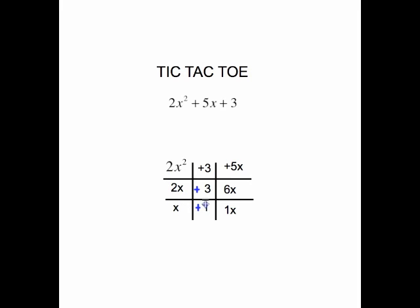So everything in this grid was found by multiplying. These multiplied to give you 2x squared. These multiplied to give you 3. Multiply across. 2x times 3 gives us 6x. x times 1 gives us 1x. So all of the grid is filled in using multiplication. The only place in the grid where we think about adding is right there. Take those numbers. 6x plus 1x is 7x. We want that value here to equal that 5x at the top of the column. It doesn't equal 5x. That says we've placed the 3 and the 1 in the wrong places.